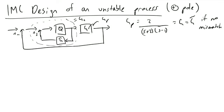In this video, I'm going to cover how we can design an IMC-based controller with an unstable process. In this example, we're going to be working with the process G_P equal to 2 over (S+2)(S-1). Because we have the S minus 1 term, we have a positive pole at S equal to 1. Having positive poles in our denominator causes this overall process to be unstable, so we're going to have to design a controller that is able to make this inherently unstable process stable.